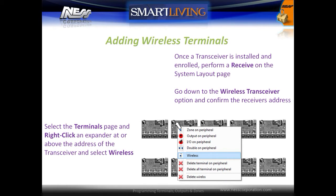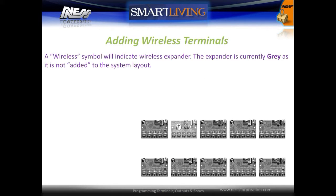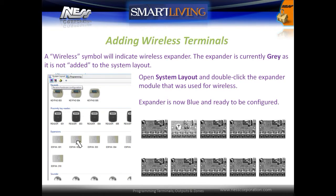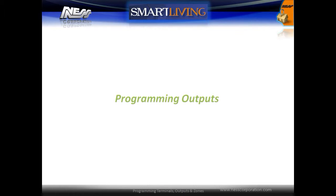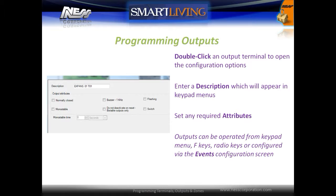Right-click on an expander that is at or above the address of the transceiver and select the wireless option to set this as a wireless expander. A wireless symbol will indicate a wireless expander. The expander is currently greyed out as it is not yet added to the system layout. Open the system layout screen and double-click the expander module used for the wireless expander — this enables the virtual wireless expander, which will now turn blue and is ready to be programmed.